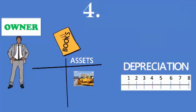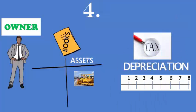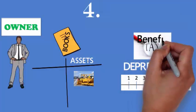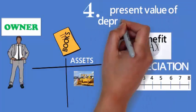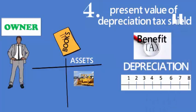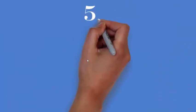That is depreciation in the first year, second year, third year, fourth year, fifth year, and so on as per the life of the asset. This depreciation will give him an additional advantage — that is the tax shield, the tax benefit. So what he is going to consider is the present value of the depreciation tax shield. That is the fourth factor.